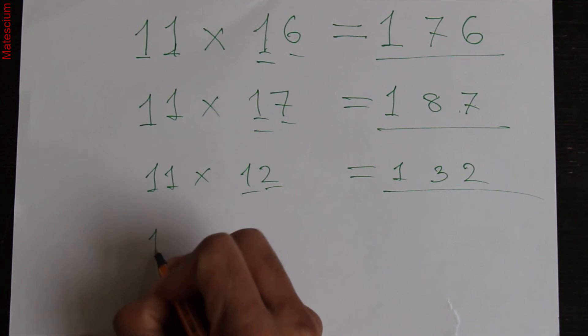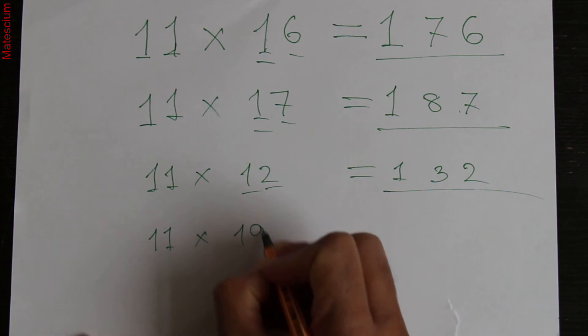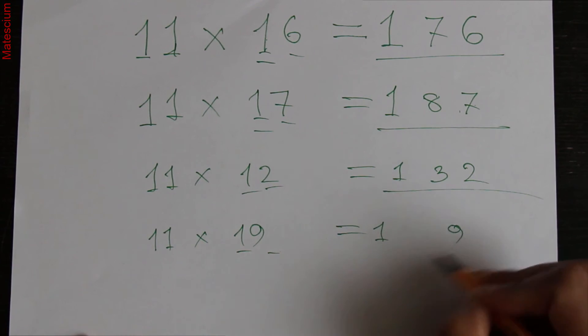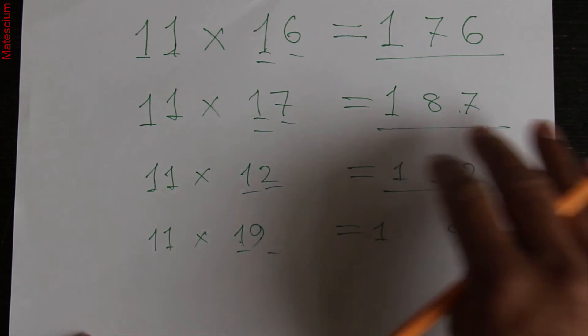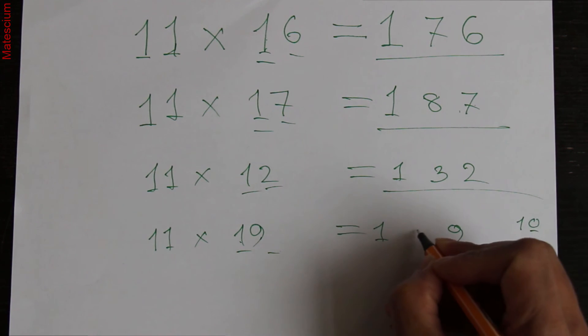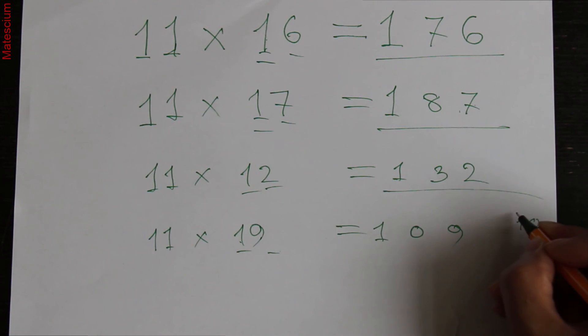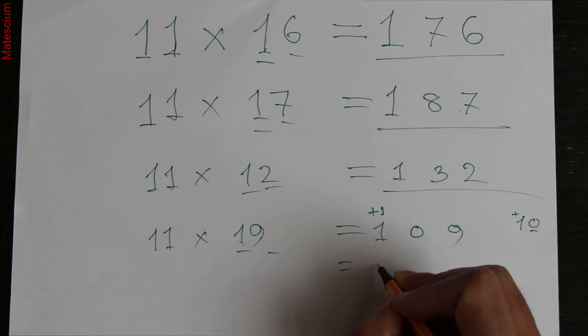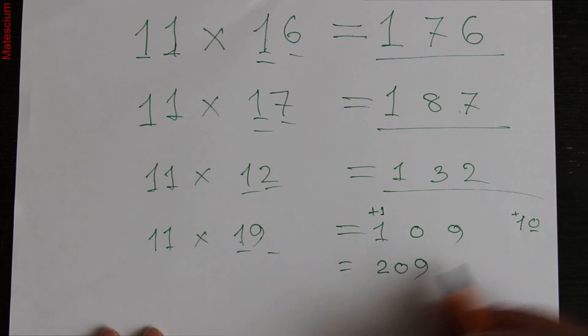Okay, then practice one more thing. 11 times 19. How is it possible, right? Then write 1 here, 9 here, and then 9 plus 1 is 10. In this case, I have to apply something different. 10 means I have to write this 0 here and carry is 1. 1 carry is here. So 1 plus 1 is 2, then 0 here, and the 9 is here. That means 11 times 19 is 209. Yes, this is the answer.